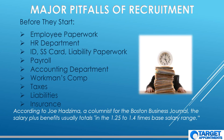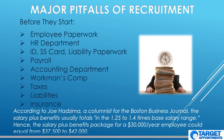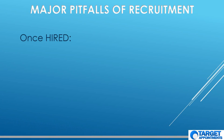According to Joe Hadzima, a columnist for the Boston Business Journal, salary plus benefits — if you're offering benefits — usually costs anywhere from 1.25 to 1.4 times the base salary. Hence, the salary plus benefits package for a $30,000-a-year employee could equal anywhere from $37,500 to $42,000. We're using very low numbers here so you understand we're not fudging anything — this is the reality of hiring an individual at $15 an hour.